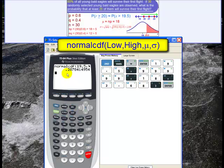So there's the area under the normal curve to the right of 19.5. It's about 0.2878. Let's go back to the PowerPoint.